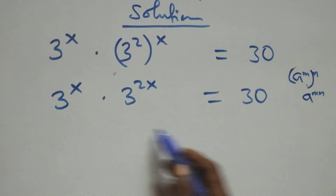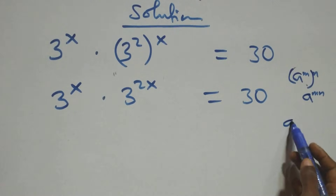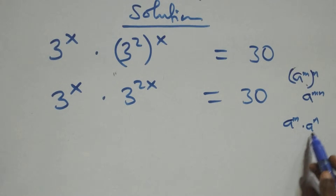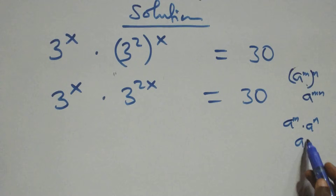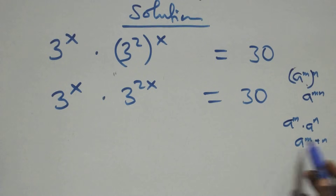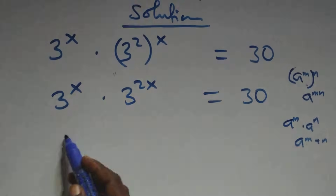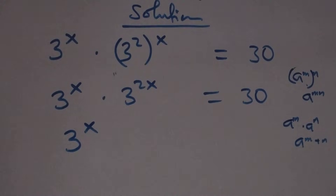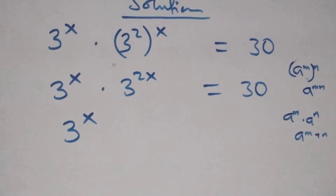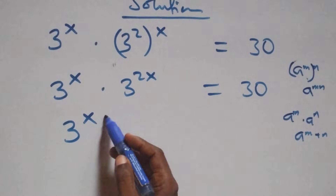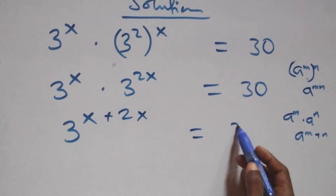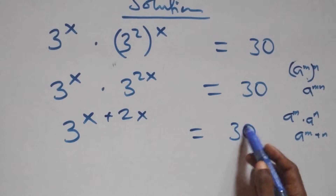Then, following the rule that A raised to power n times A raised to power m can be written as A raised to power n plus m, we have 3 raised to the power x plus 2x equals to 30.